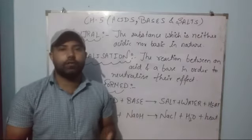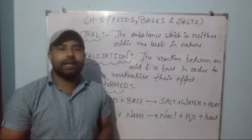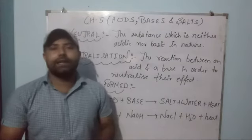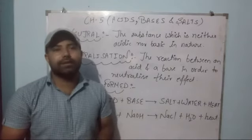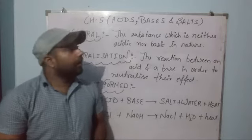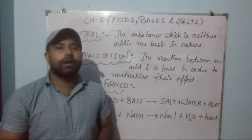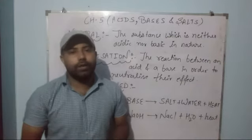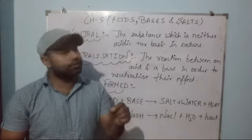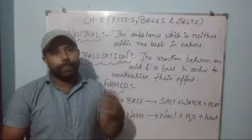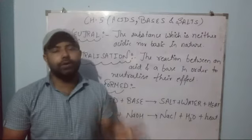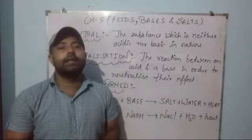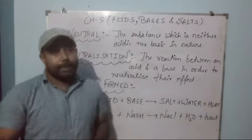A simple example of a neutral substance is common salt solution. If you check the effect of litmus paper on that solution, you will find that neither the color of blue litmus nor the color of red litmus will change. This tells us it is a neutral substance.